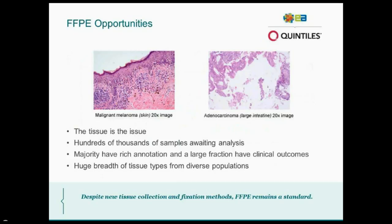There's a huge breadth of different tissue types from very diverse populations, and these types of samples are collected really routinely around the world. There are, of course, other tissue collection and fixation methods out there, some of which avoid some of the problems I've described. However, FFPE really remains the standard — that's what most laboratories do, and most pathology services will formalin-fix their samples. Because we have these millions of samples around the world that we'd like to be able to access, we really do need solutions for FFPE samples, even if new methods for tissue collection and fixation are being introduced.